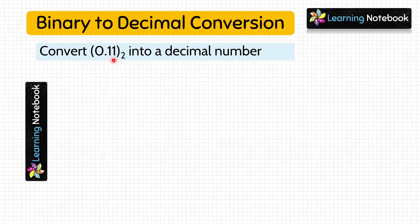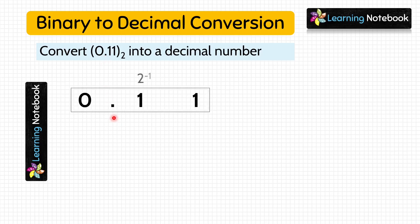Next question: convert 0.11 into a decimal number. We are given a binary number with a decimal point, which means our answer will be a float number. Let's write the place values of all the digits. This time, the place values will be 2 raised to the power negative 1 and 2 raised to the power negative 2.